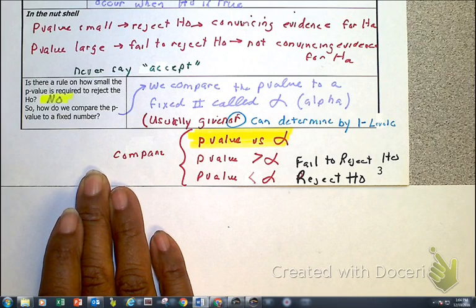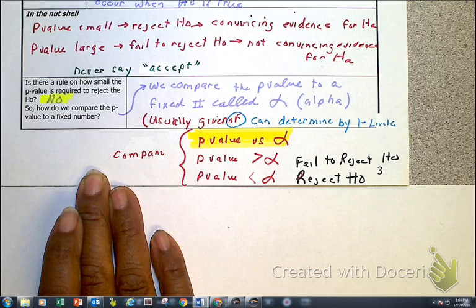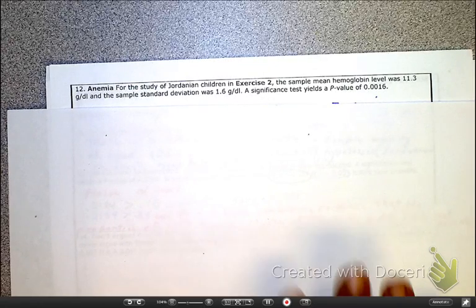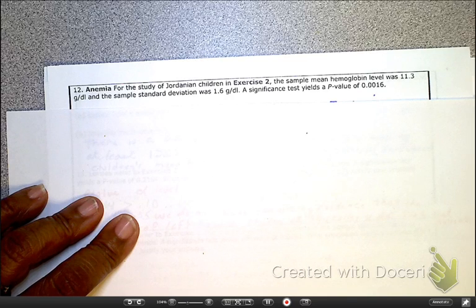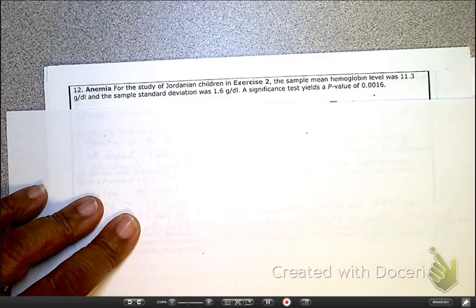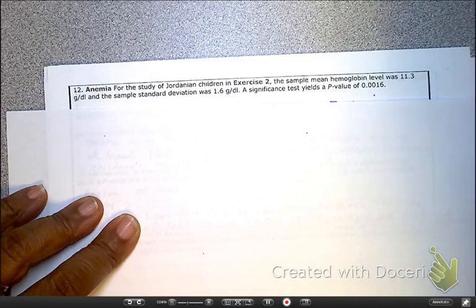Okay, so on page 4 here, we're still talking about the Jordanian children potentially being anemic. So as we can see here, I've got the mean to be 11.3 and the standard deviation of the samples to be 1.6.